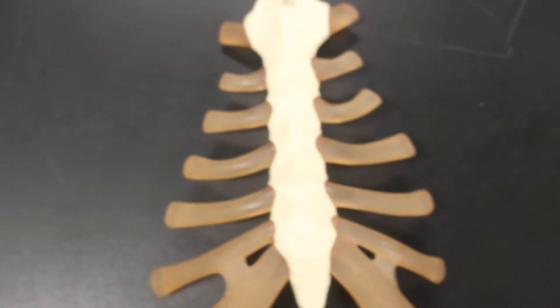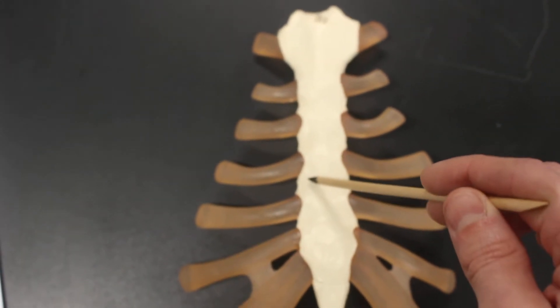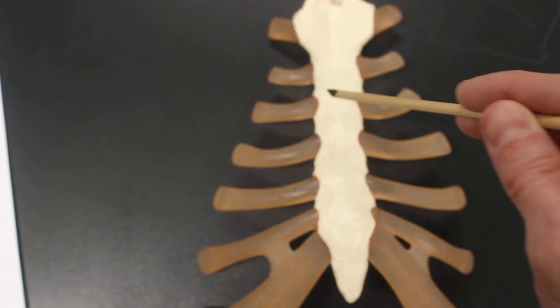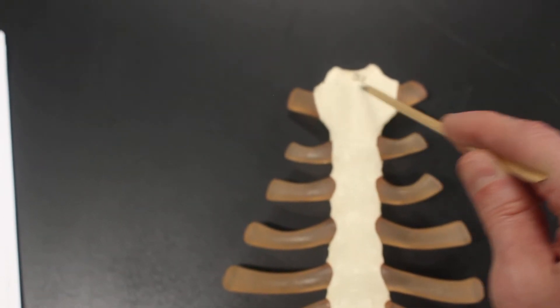This here is the sternum. The sternum is broken into three parts: the xiphoid process, the body, and the manubrium.